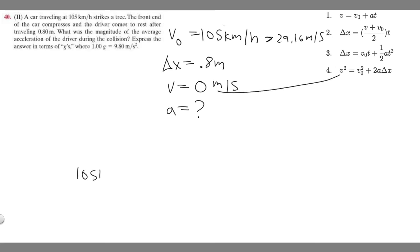So v squared, we know v is zero, so zero squared is just zero. So zero equals v sub zero squared which is 29.16, so 29.16 squared, plus 2 times a times 0.8. So 0.8 times 2 is going to be 1.6, so it's going to be 1.6a. Then I'm going to minus the 1.6a to this side, so minus 1.6a equals 29.16 squared.